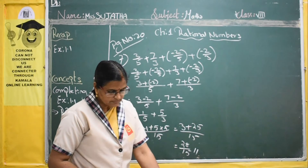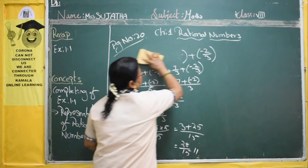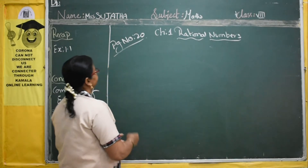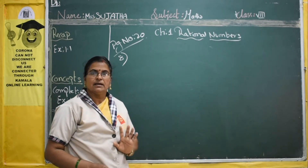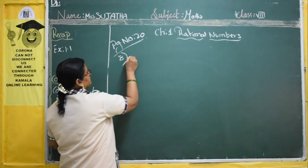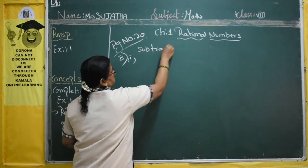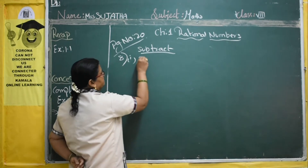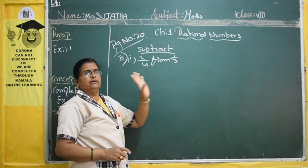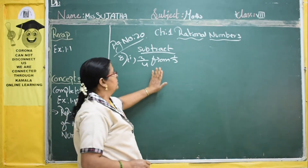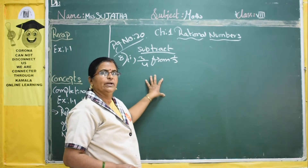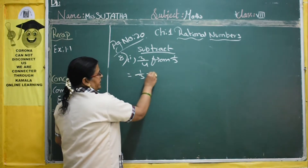Understood? First we rearrange: same denominators of the fractions are arranged together. After that you take the LCM, and you get 28/15. That is the 7th sum. Now the 8th one: subtract. The 8th sum is subtraction. There are 3 bits. I will explain the first bit: subtract 3/4 from 1/3. So you have to do the subtraction of the two fractions. Which one do you write first? From — so 1/3 comes first. So: 1/3 minus 3/4.